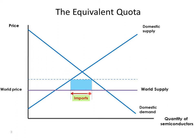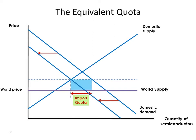Remember this is the imports under the tariff, so let's compare with a quota which has the same quantity of imports. We can think of the quota as subtracting this quantity from the domestic demand curve — shifting back the domestic demand curve so that domestic suppliers will choose how much to supply out of domestic demand after the quota has been taken out. So the domestic demand curve shifts back by the amount of the quota. This distance here is the same as this distance here, just the quantity of the quota.